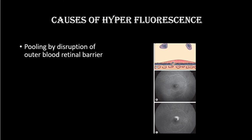Pooling is caused by disruption of the outer blood-retinal barrier, which is provided by the tight junctions between the retinal pigment epithelial cells. The fluorescent dye is 70% bound with blood proteins, and normal choroidal vessels are not leaky, so dye remains in large choroidal vessels. However, at the choriocapillaris the unbound dye leaks out, passes through Bruch's membrane, and if the outer blood-retinal barrier is disrupted, it collects in the sub-retinal space or under the RPE cells.